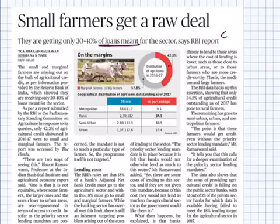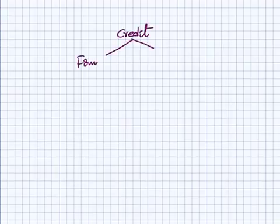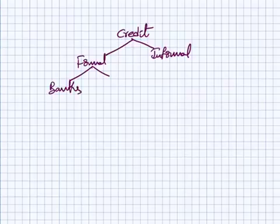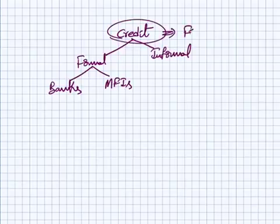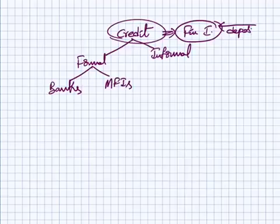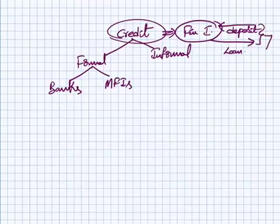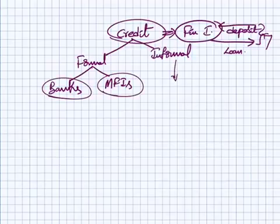We should know the credit structure in India. Credit is obtained in two ways: formal credit and informal credit. In formal credit we have banks and other organizations like microfinance institutions — these are called financial intermediaries. They collect deposits and give out loans, earning interest.